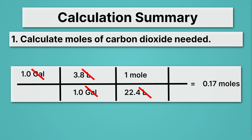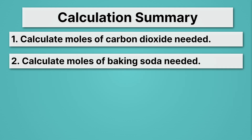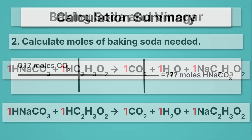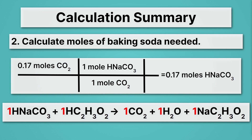Remember, 0.17 moles is the carbon dioxide — not yet the baking soda. So step two: calculate the moles of baking soda needed. The trick is to use our chemical reaction. Notice that one molecule of baking soda combines with one molecule of vinegar to make one molecule of CO₂ — a one-to-one ratio. So we multiply 0.17 moles of CO₂ by one mole of baking soda per one mole of CO₂, giving us the same number: 0.17 moles of baking soda. However many moles of CO₂ you need, that's the moles of baking soda you also need.